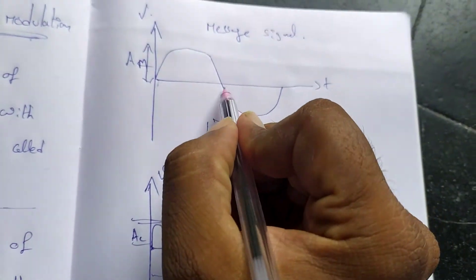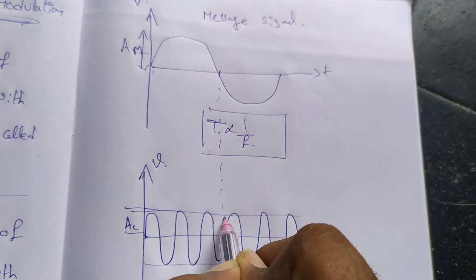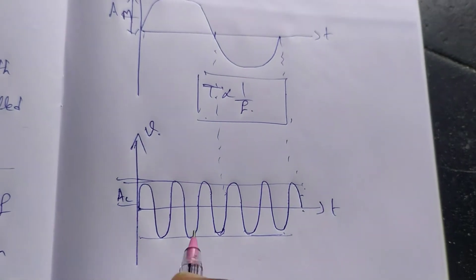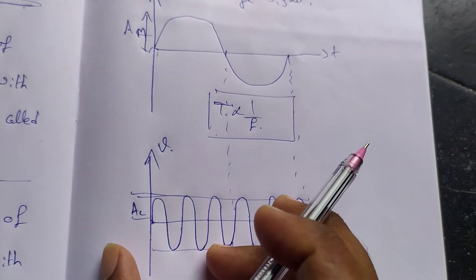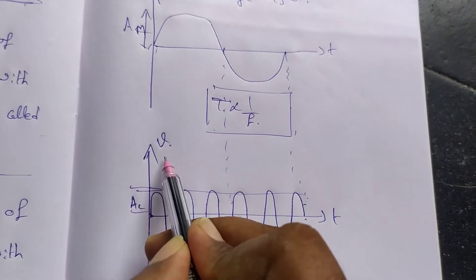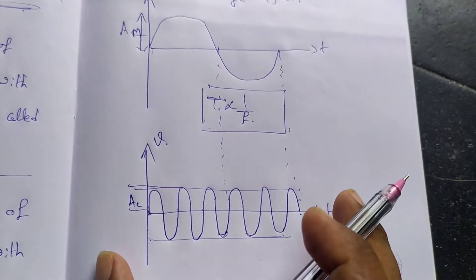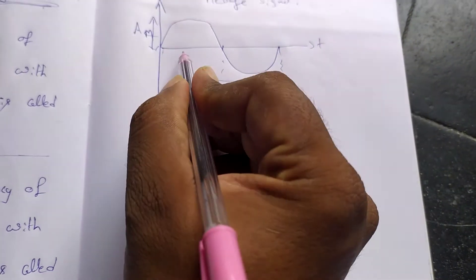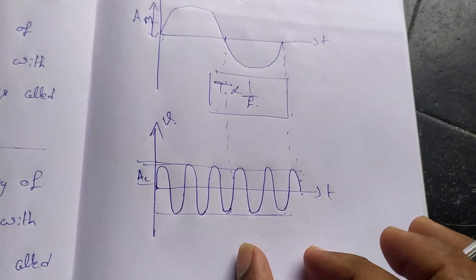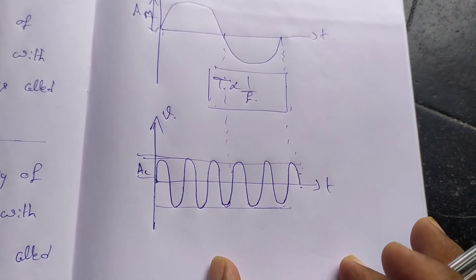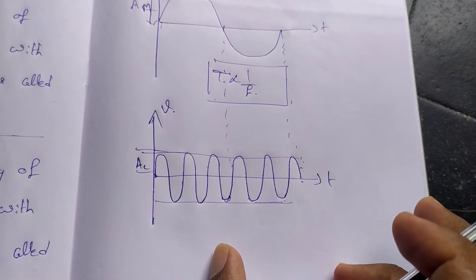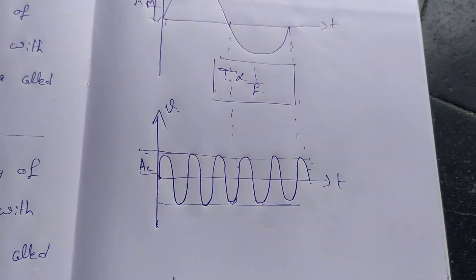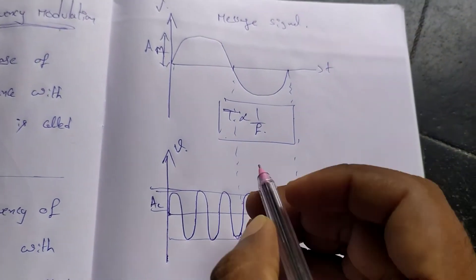These two are combined. The signal amplitude is constant. There are two values — the amplitude remains the same. As you can see, the frequency and phase of the carrier signal vary.